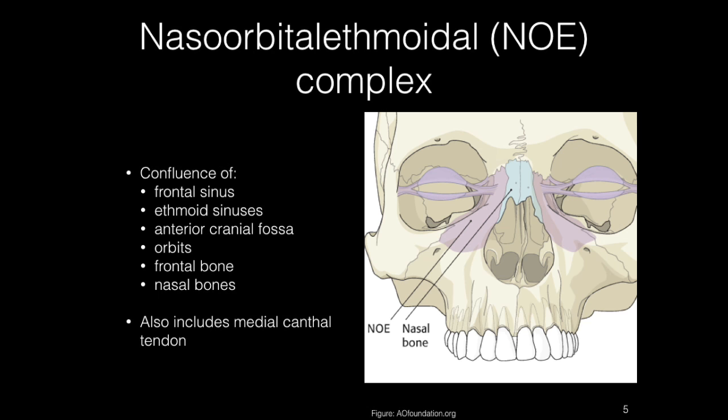Complications of nasal orbital ethmoidal fractures include blindness, telecanthus, anophthalmos, mid-face retrusion, cerebral spinal fluid fistula, anosmia, epiphora, sinusitis, and nasal deformity. Accurate diagnosis and prompt surgical treatment are critical to avoid complications and to obtain an aesthetic surgical result. The treatment of choice for nasal orbital ethmoidal fractures is an open direct approach with meticulous reduction and fixation including any appropriate bone grafting. Make sure to consult the appropriate services including ophthalmology and neurosurgery if needed.